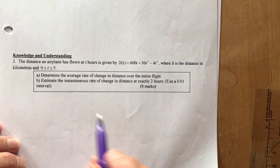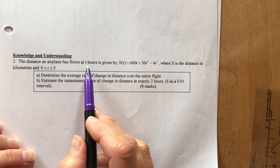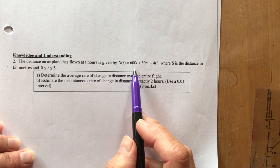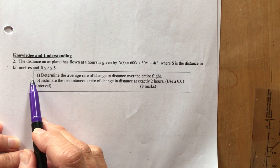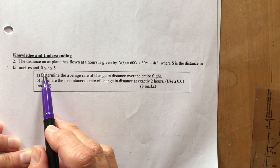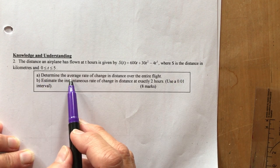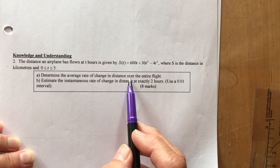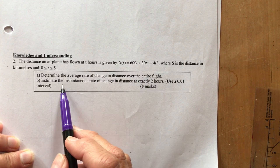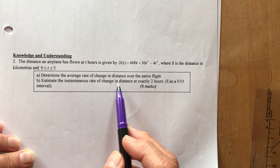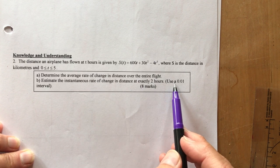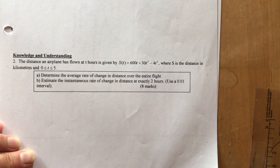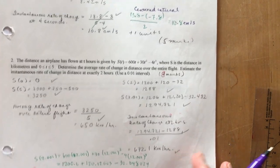The distance an airplane has flown in t hours is given by an equation, where s is the distance in kilometers between 0 and 5. Time is between 0 and 5. Determine the average rate of change in distance over the entire flight and estimate the instantaneous rate of change in distance at exactly 2 hours using a 0.01 interval. Here's your solution.